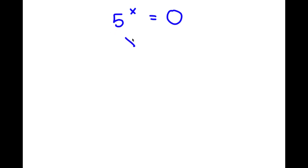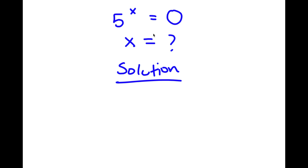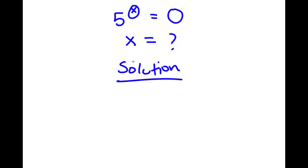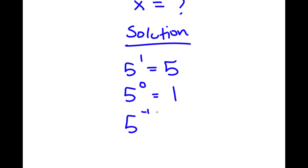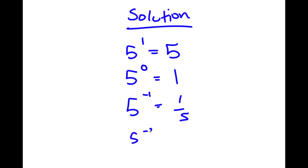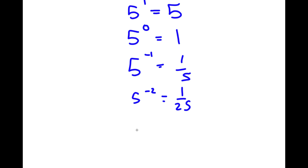In this problem, 5 to the power of x is equal to 0, and I want to find the value of x. I'll start by trying out values of x. 5 to the power of 1 is 5. 5 to the power of 0 is 1, since any number to the power of 0 is 1. 5 to the power of negative 1 is 1/5. 5 to the power of negative 2 is 1/25. 5 to the power of negative 10 is 1 over 5 to the power of 10.